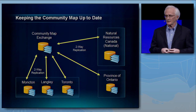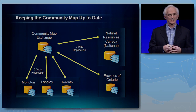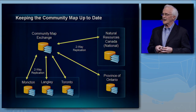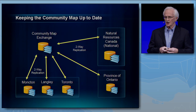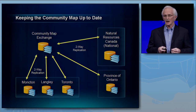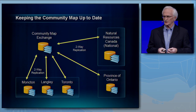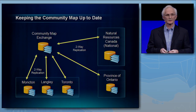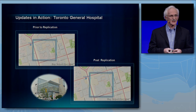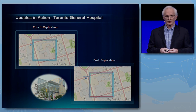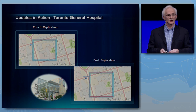To capture these updates and keep the community map current, we started a project last fall with the City of Toronto, two other cities — District of Langley, Township of Langley in BC, and the City of Moncton — together with Natural Resources Canada and the Province of Ontario to create what we call a community map exchange. It's a concept and a server at Esri Canada where municipalities replicate their data through geodatabase replication into the exchange, and then it can be retrieved by other participants who can also put their updates in. This solves a major problem in the national map of not being able to get updated building information, which traditionally has been obtained from aerial photography. Here's an example of these updates in action in an area of Toronto around the Toronto General Hospital — you can see the old map before the major development, and then after the replication the new map is completely updated.